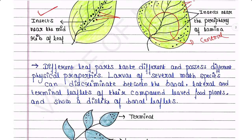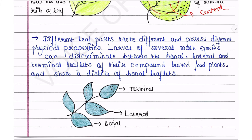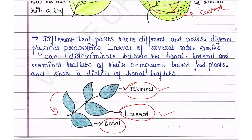Different leaf parts taste different and possess different physical properties. Larvae of several moth species can discriminate between basal, lateral, and terminal leaflets of their compound-leafed food plants, and show a dislike of basal leaflets. Some insects prefer terminal leaves and some prefer lateral leaves, but larvae of several moth species specifically avoid the basal leaflets.